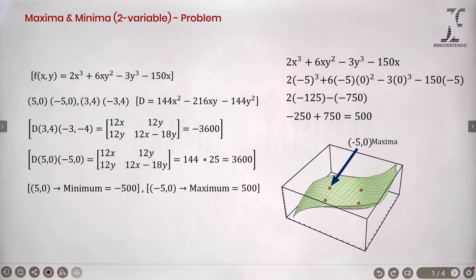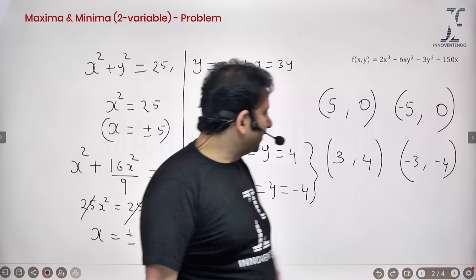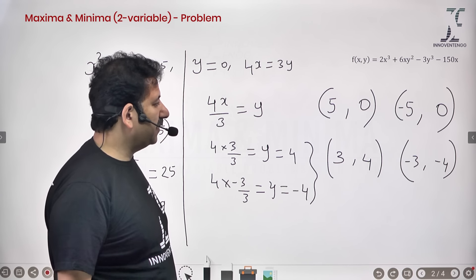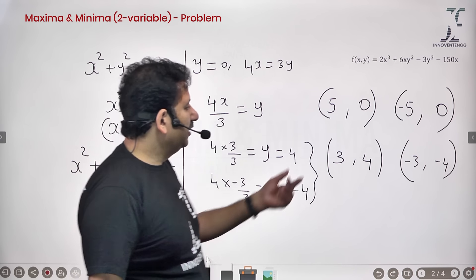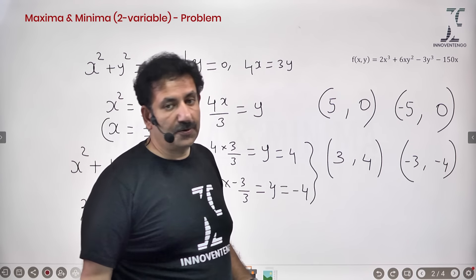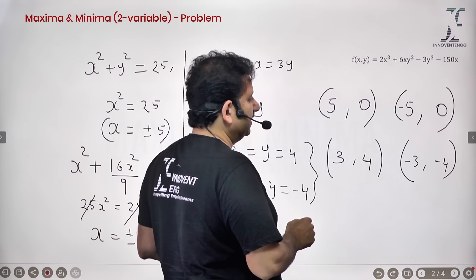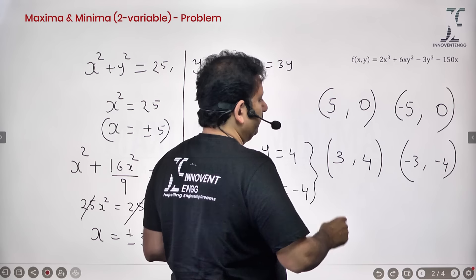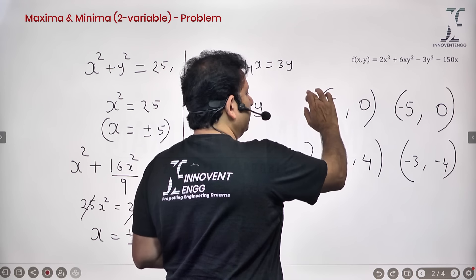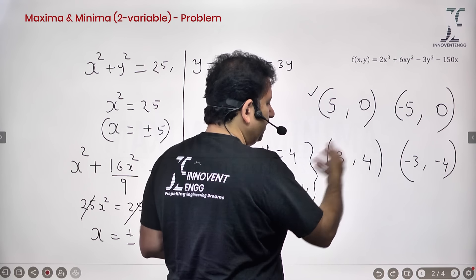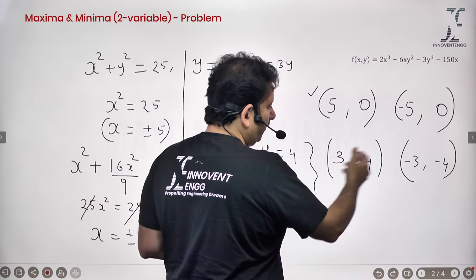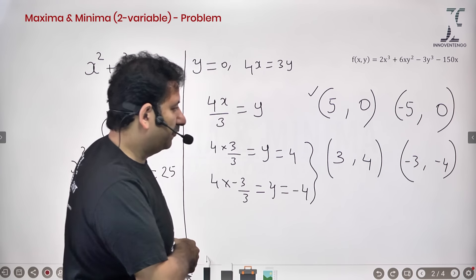Though the function is not symmetric, one of the things we learned is that you can get critical points that are numerically the same but with opposite signs. In that case, you only need to investigate the determinant of the Hessian for one point of each pair — either (5, 0) or (-5, 0), and either (3, 4) or (-3, -4).